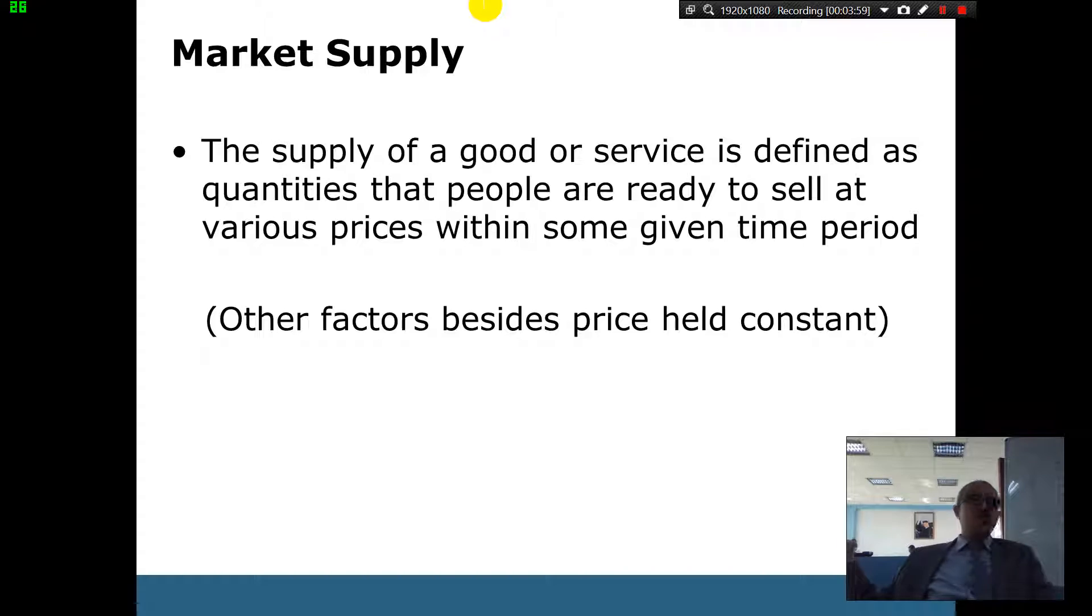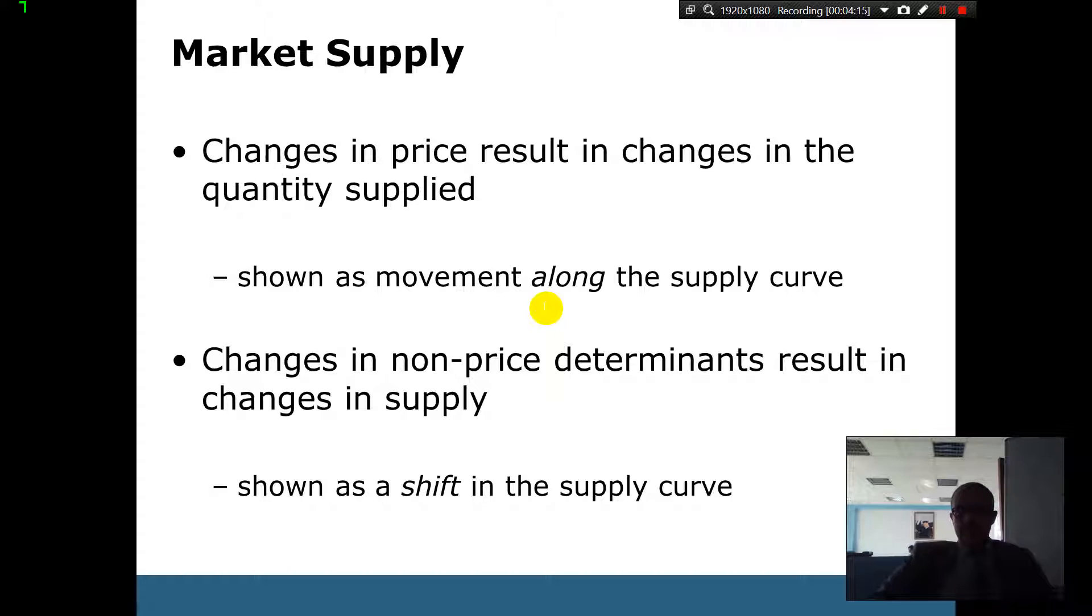That's the other side, which is demand. And we're talking about consumers. Now we're talking about suppliers. And what we mean by suppliers, we're talking about people who actually produce. And the producers, we're talking about people who are willing and able to produce at different prices. So we have the same thing, movement and shift. You move if there's a change in price only. And you shift for those reasons.